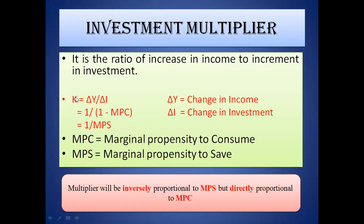The investment multiplier is denoted by K, where K equals change in income (ΔY) divided by change in investment (ΔI). This whole multiplier can also be written as 1 divided by (1 minus MPC), where MPC stands for marginal propensity to consume.